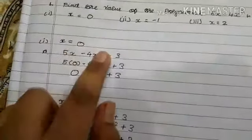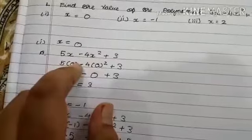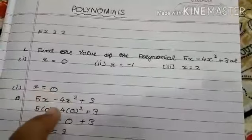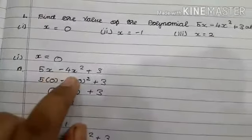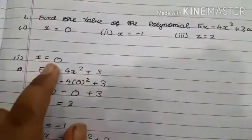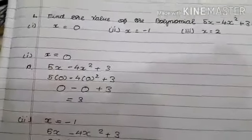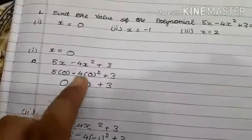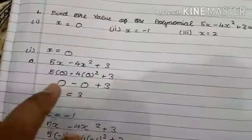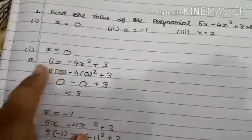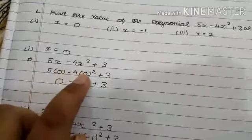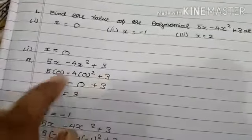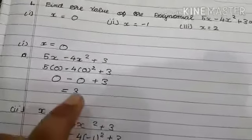Looking at the first sub-question, x equals 0. We should find the value of the polynomial 5x minus 4x square plus 3 using x equals 0. We write 0 in place of x: 5 into 0 minus 4 into 0 square plus 3. That gives 0 minus 0 plus 3. So the answer is 3.